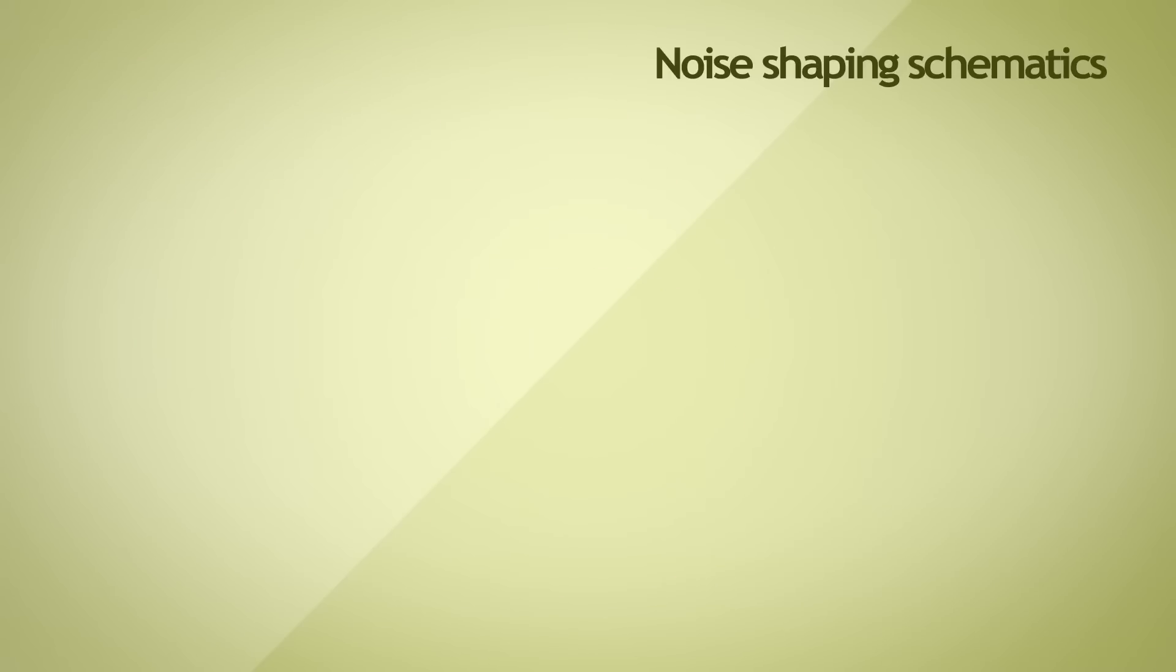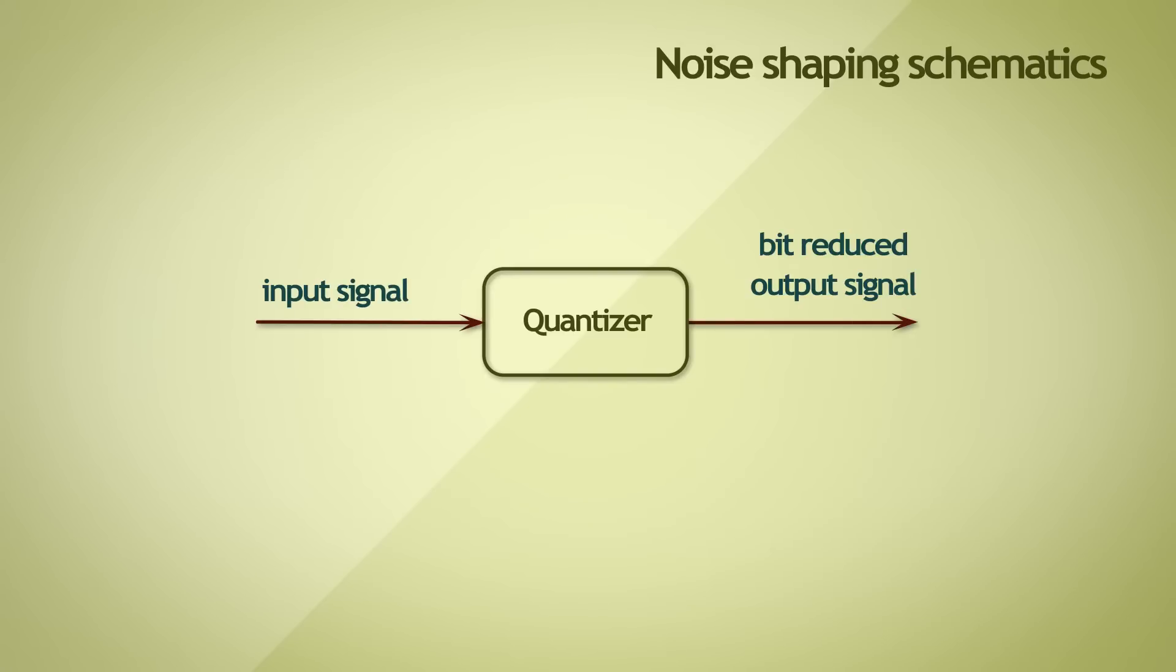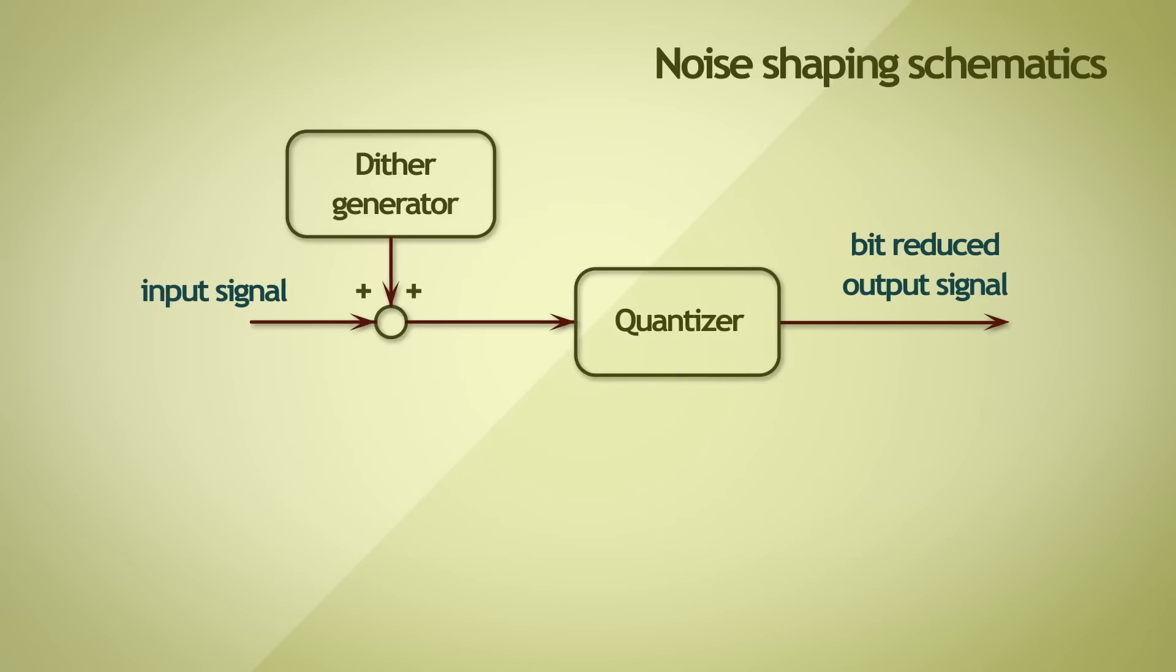When we are reducing the bit depth of an audio signal, we run the signal through a quantizer. The resultant output signal is bit reduced and would contain quantization error. To eliminate the correlated distortion that results from this quantization error, we add a dither signal to our input signal right before quantization occurs.